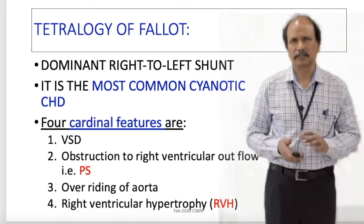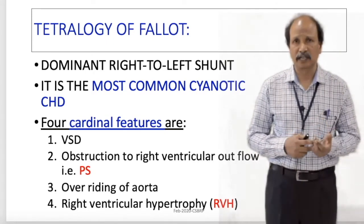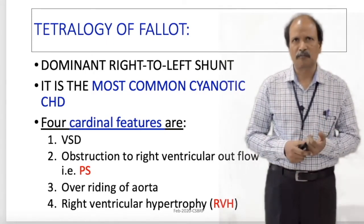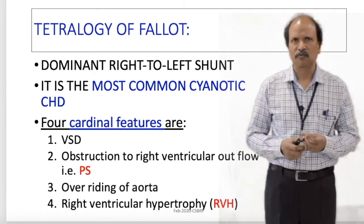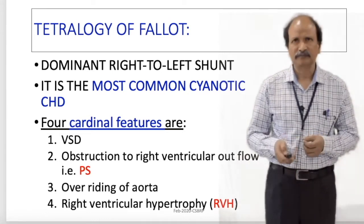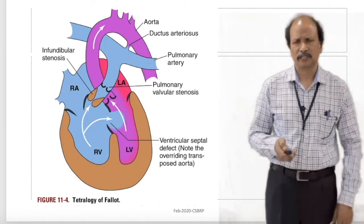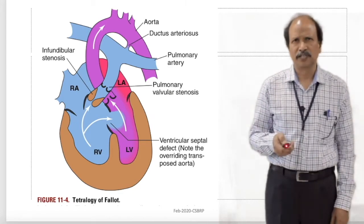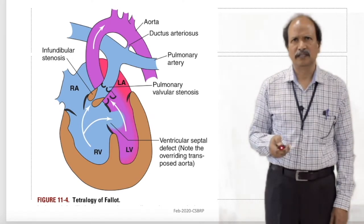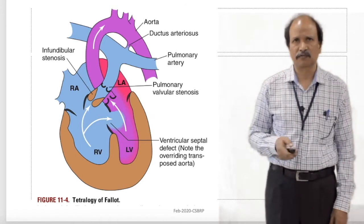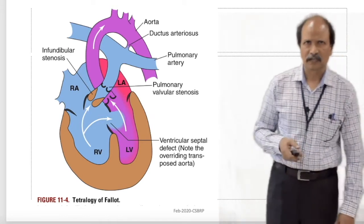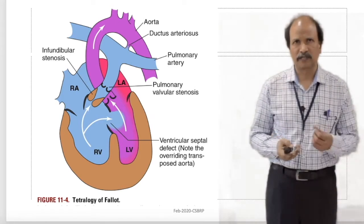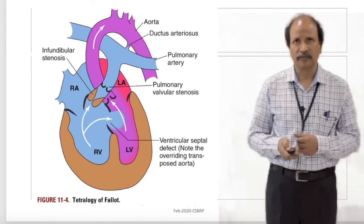The cardinal features of tetralogy of Fallot are four in number, as the name indicates. They are: VSD, pulmonary stenosis, overriding of aorta, and right ventricular hypertrophy. You can see in this image the pulmonary stenosis, the defect in the interventricular septum, and the aorta slightly shifted towards the right ventricle. You can also see the thickness of the wall of the right ventricle, which when compared to the left ventricle is more — indicating right ventricular hypertrophy. These are the four components.